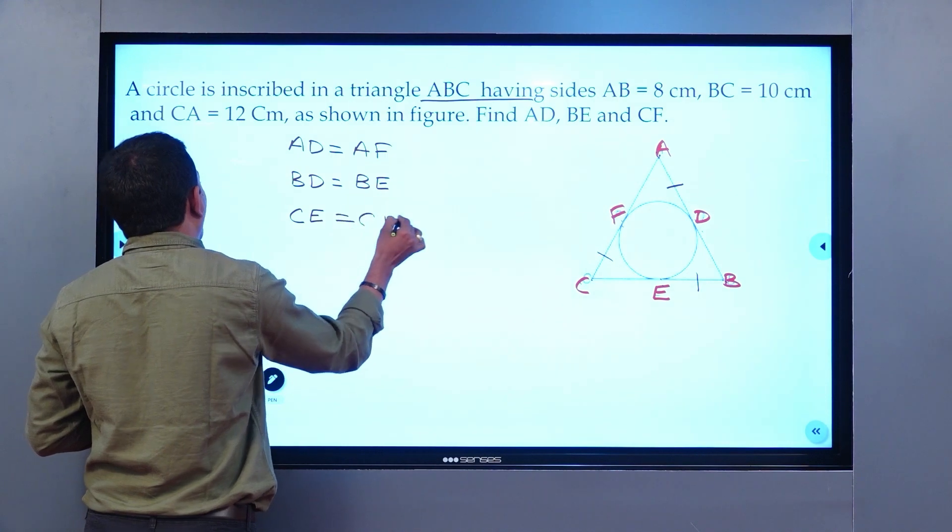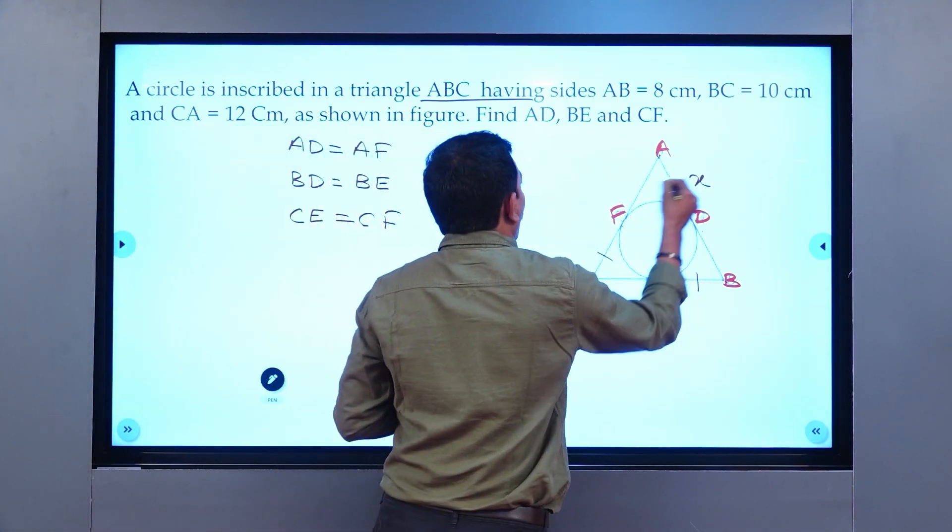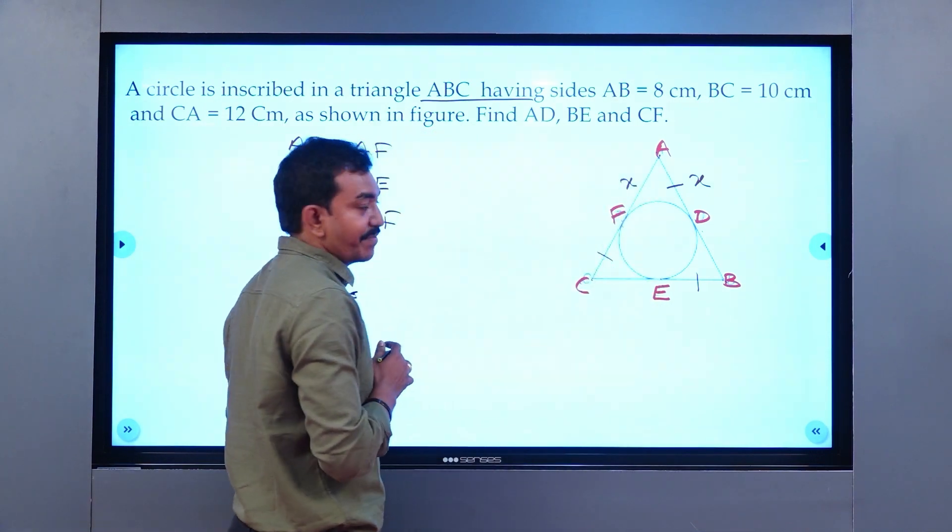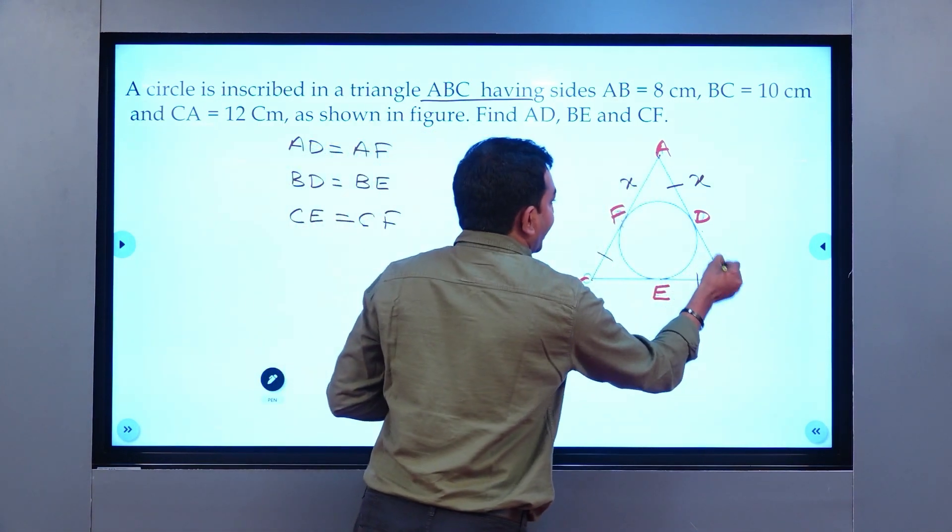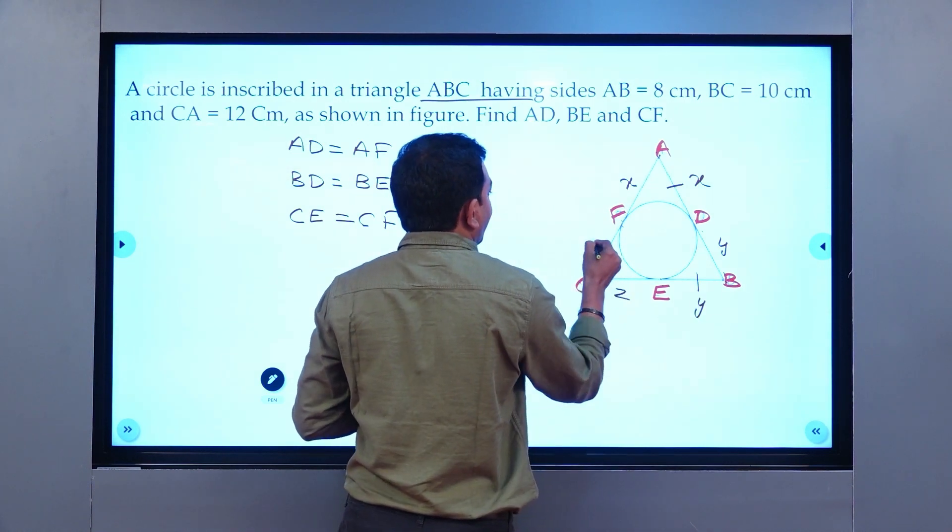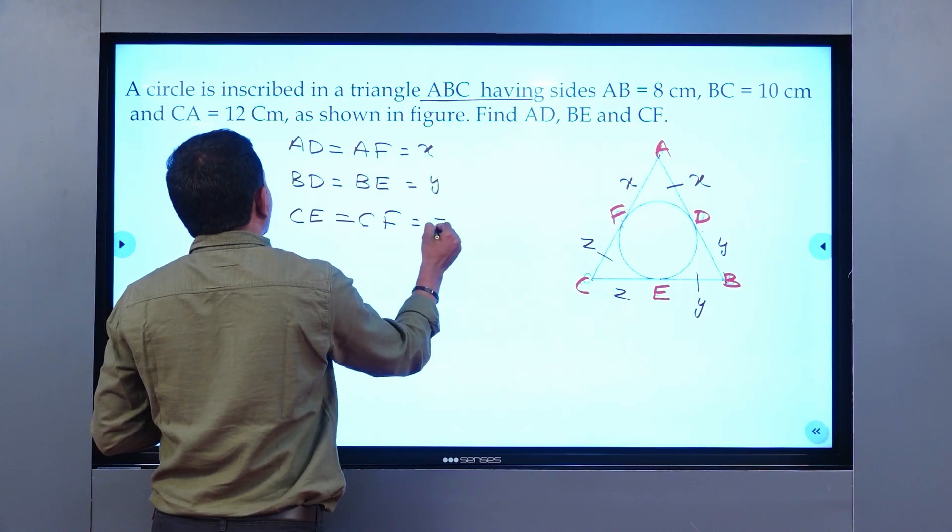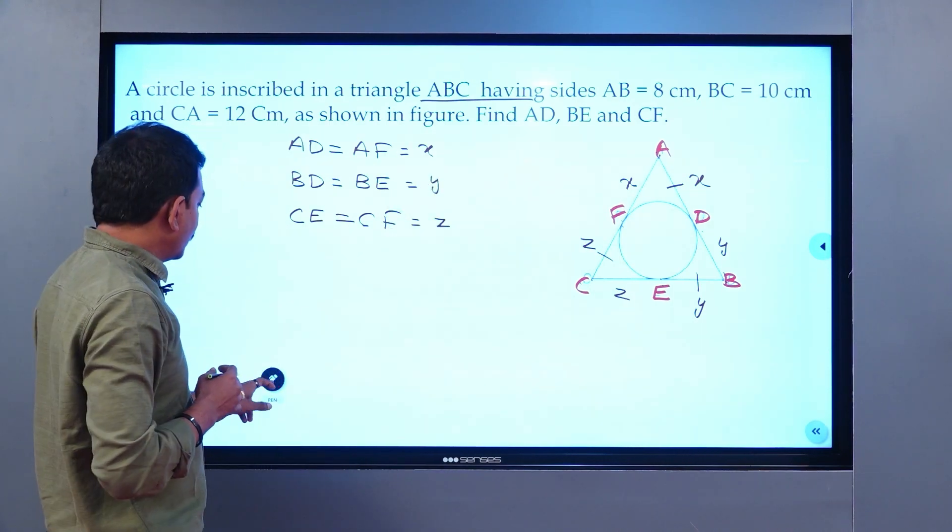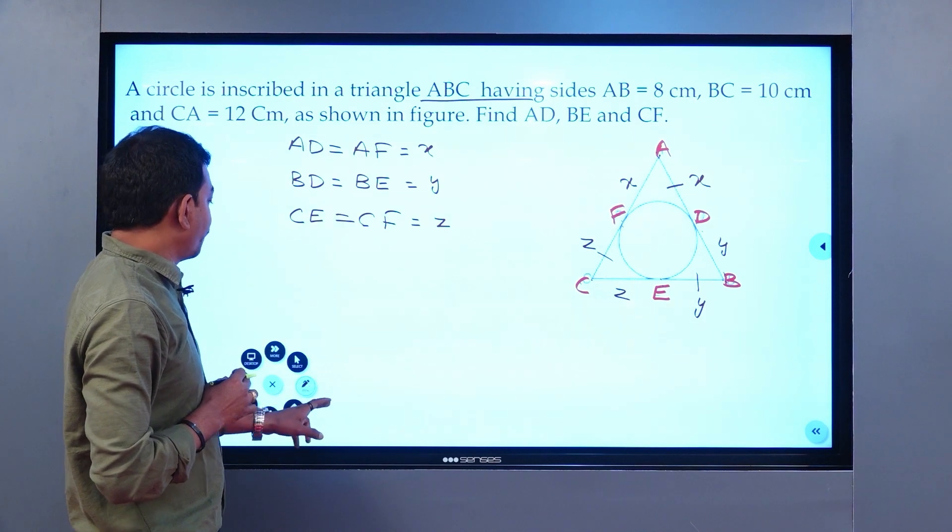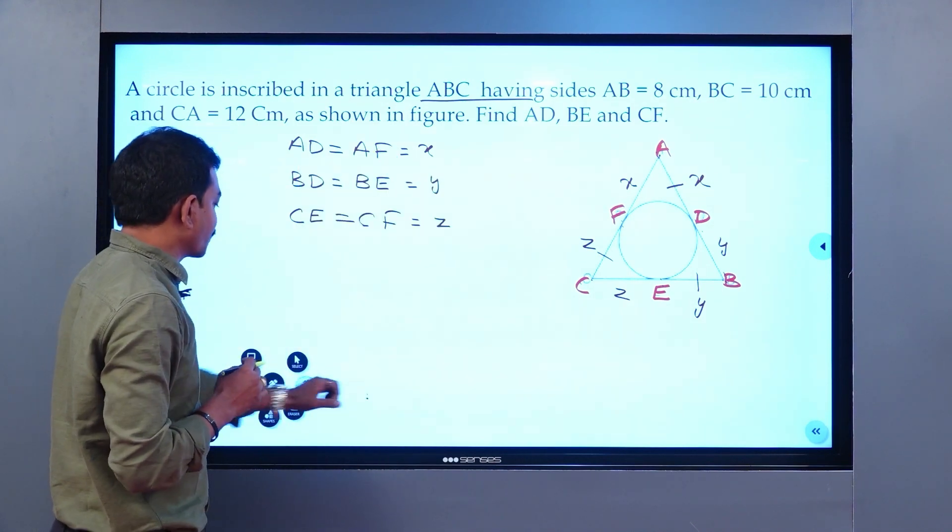Let us consider AD and AF as X centimeters, BD and BE as Y, and CE and CF as Z. The solving seems to be very tough but actually it is easy, dear students. Let us see the process of solving.